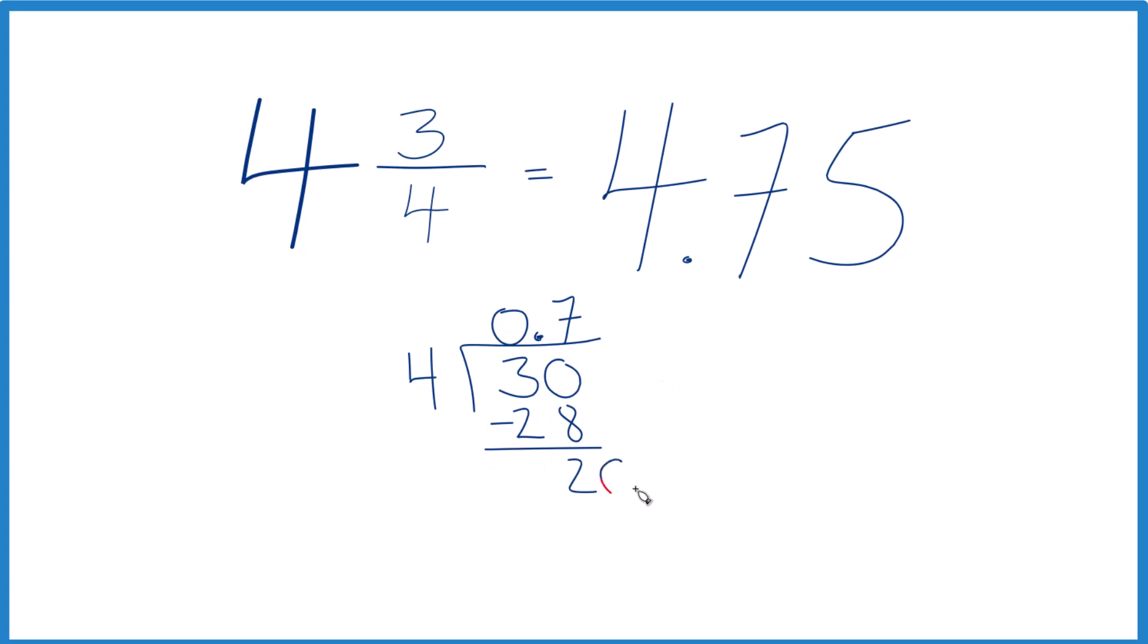Doesn't go into 2, but if we call it 20, we can move over 1. And 5 times 4, that's 20. Subtract, no remainder.